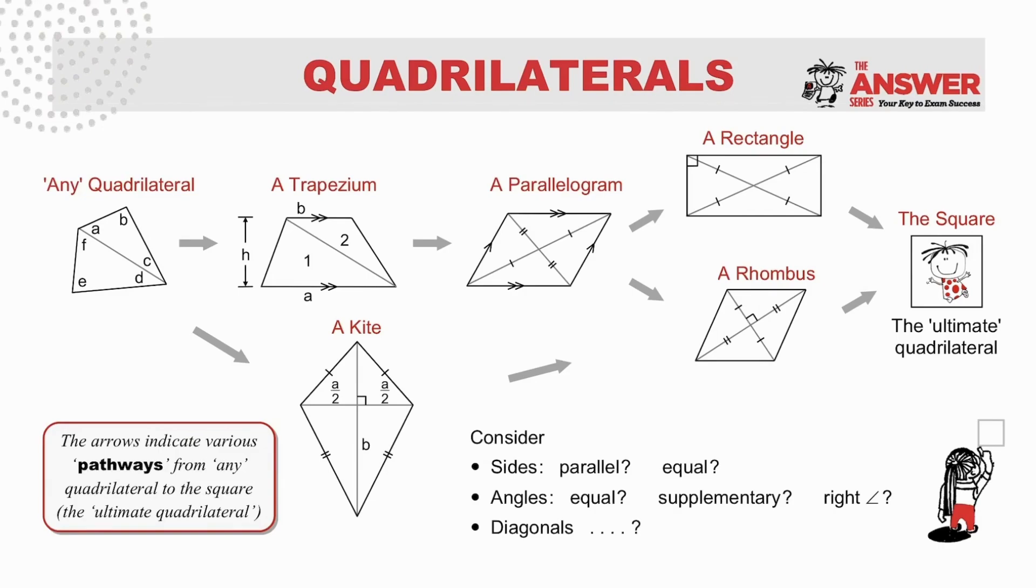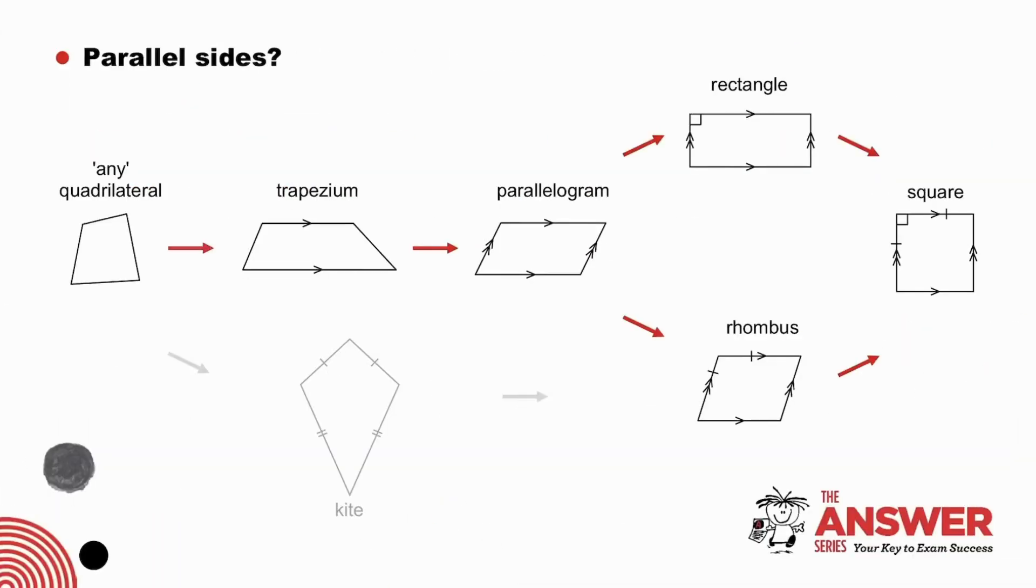Pause to consider sides, angles, diagonals. Parallel sides, pause to view this aspect along all the routes. A trapezium has one pair of parallel sides. A parallelogram has two pairs of parallel sides. And this will apply forever after to all quadrilaterals that follow the parallelogram because this is our logic. Obviously, a kite has no parallel sides.